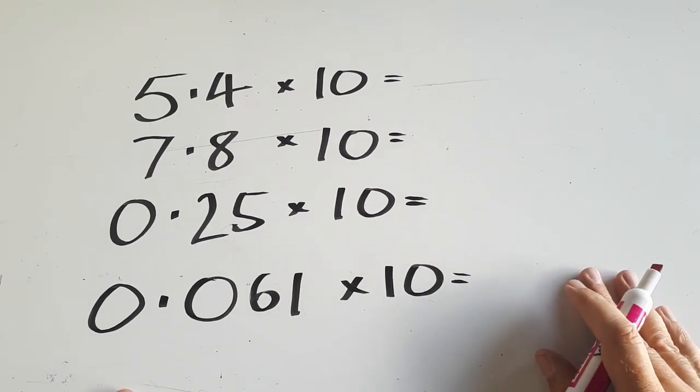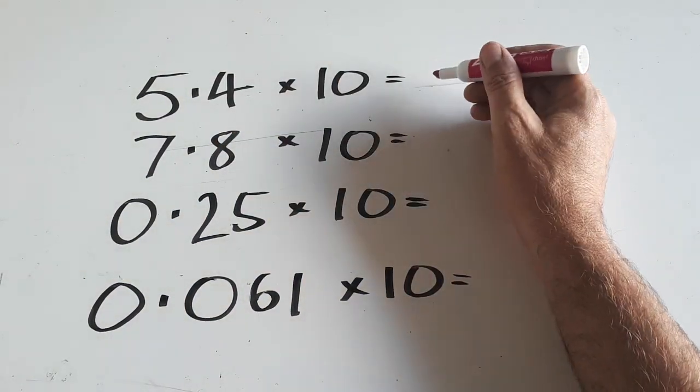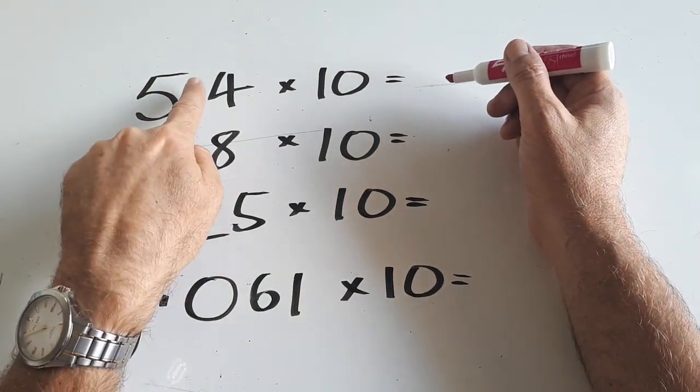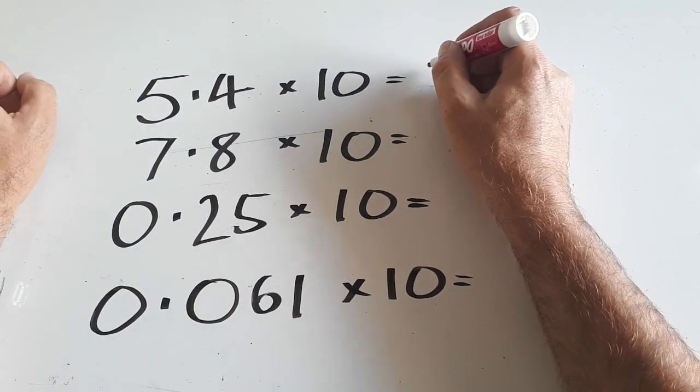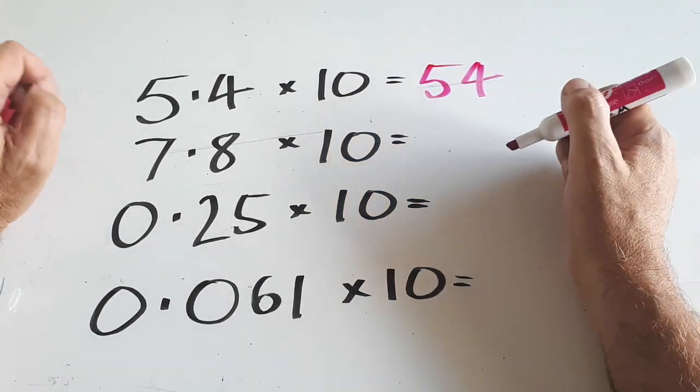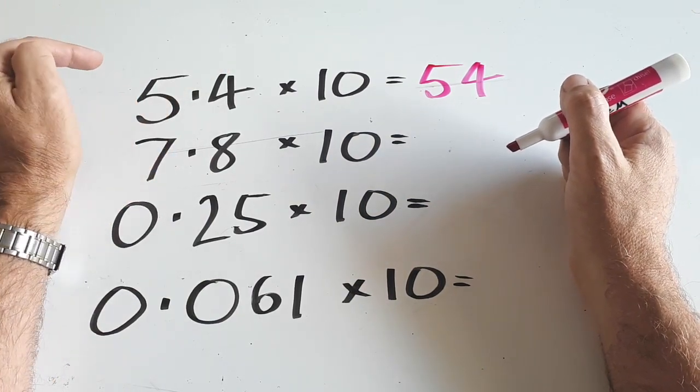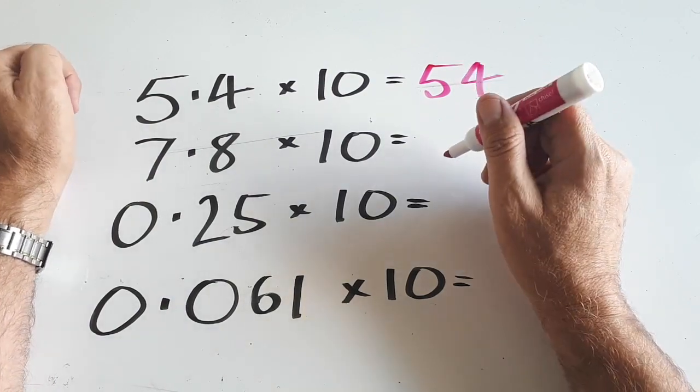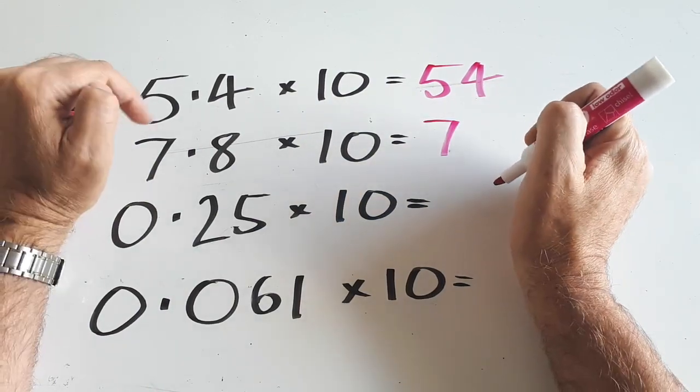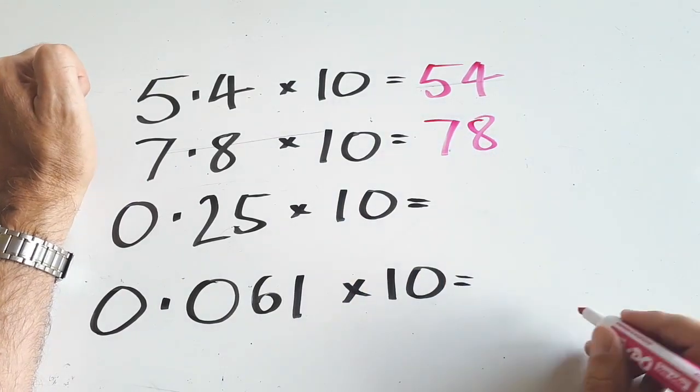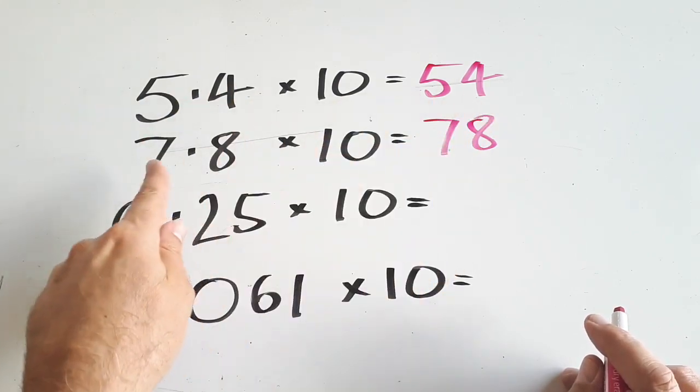Hopefully you're starting to get the hang of this now. 5.4 times 10. In practical terms, if I want a really quick answer to this, I can just cover up the decimal. My answer would be 54, but what I've really done is shifted its place value. That 5 has gone into the 10s, and these 4 tenths have made 4 ones. Same with this one here. 7.8 becomes, instead of 7 ones, 7 tens, instead of 8 tenths, becomes 8 ones. Now it's 78. You'll notice that the numbers are in exactly the same order. 5, 4, 5, 4, 7, 8, 7, 8.